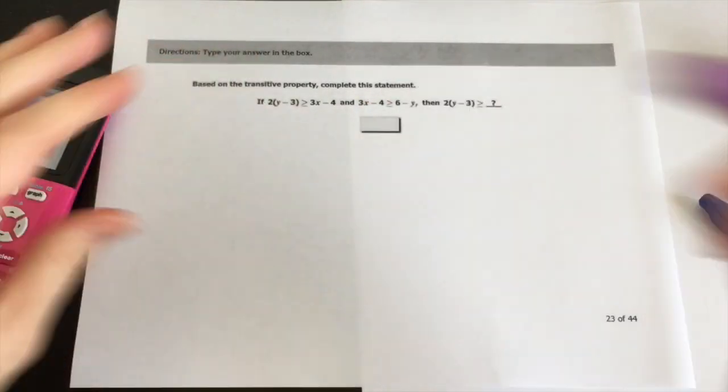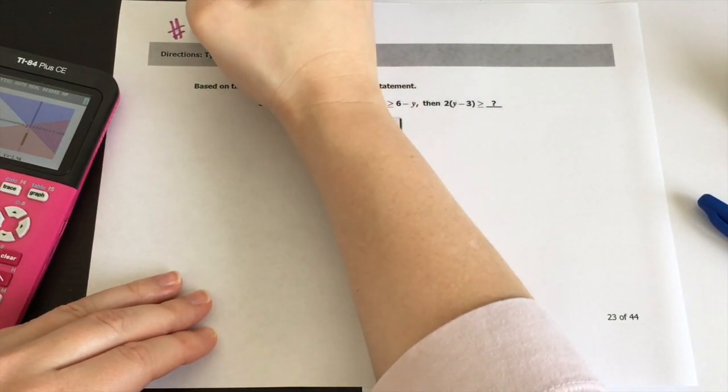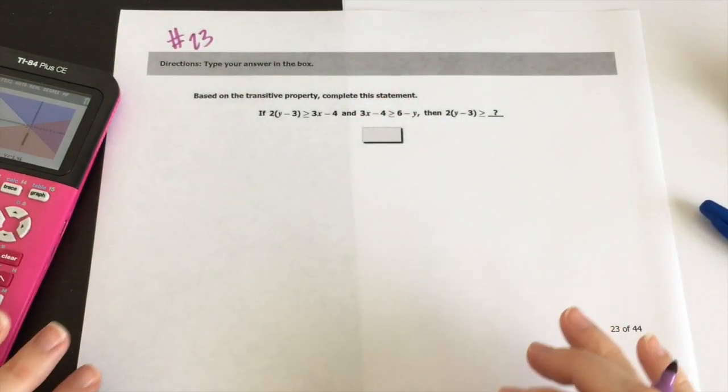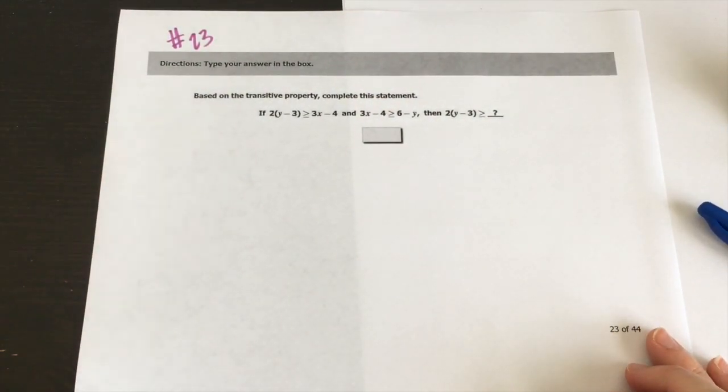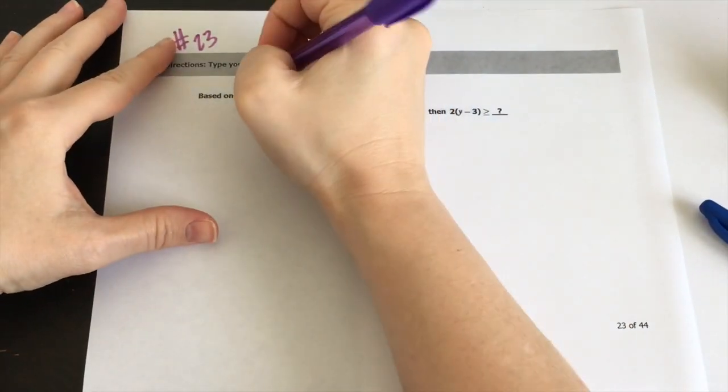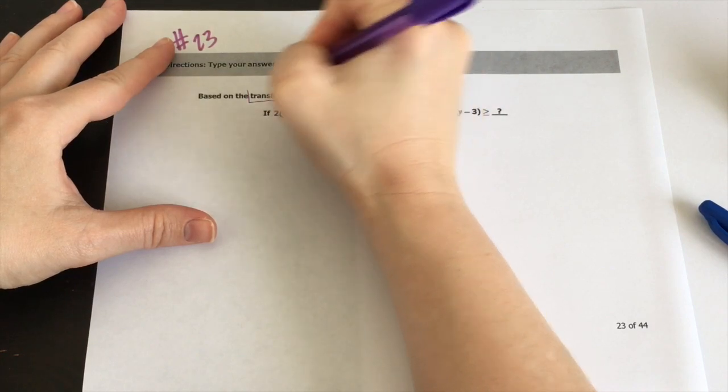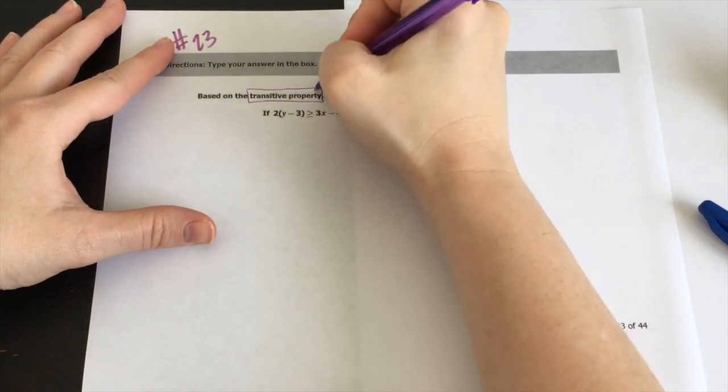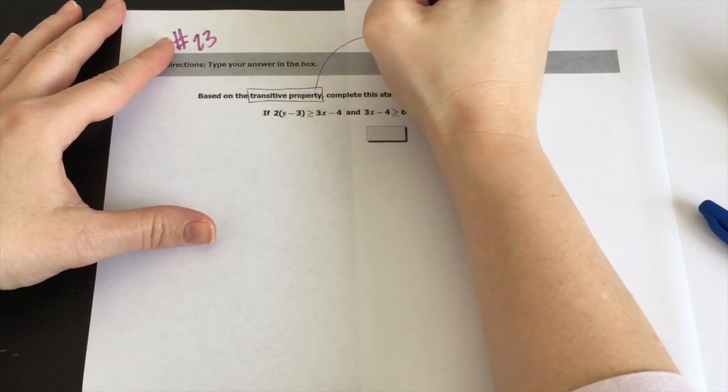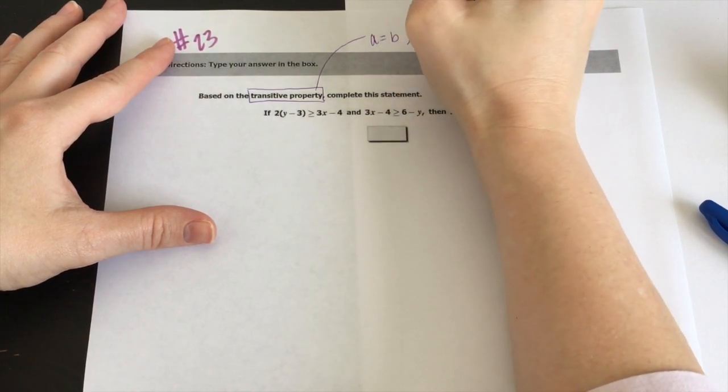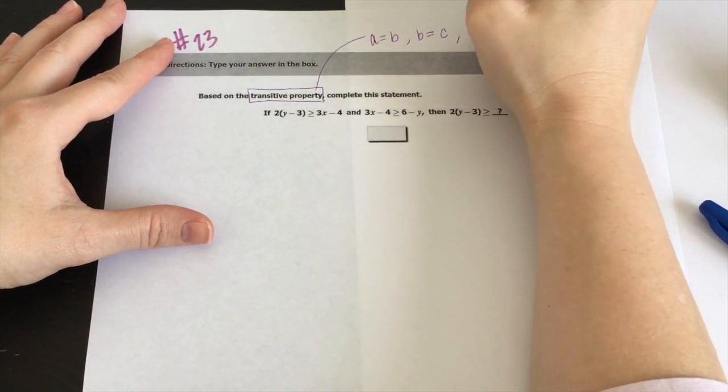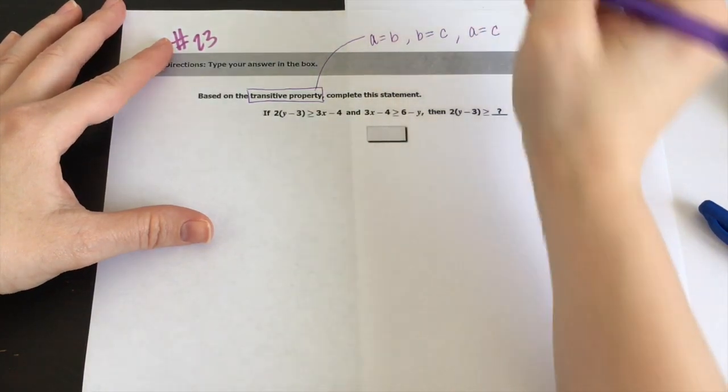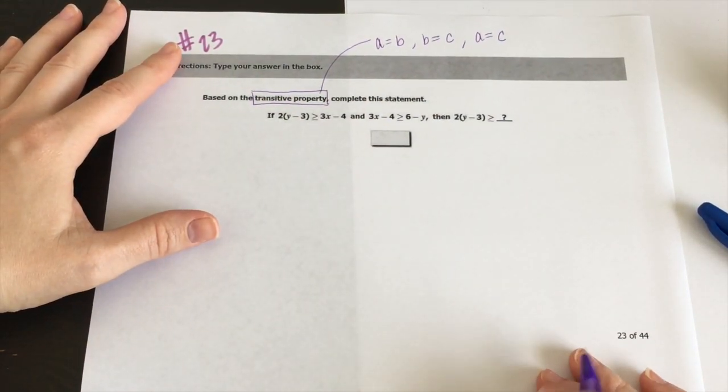Here we are with number 23. Based on the transitive property, complete this statement. Here's the thing. You have to know what transitive property means. So let's review it for just a second. So transitive property. Remember, that's the one that says if a is equal to b, and b is equal to c, then that means that a is equal to c. That's the transitive property.